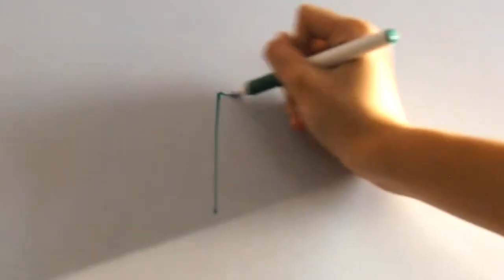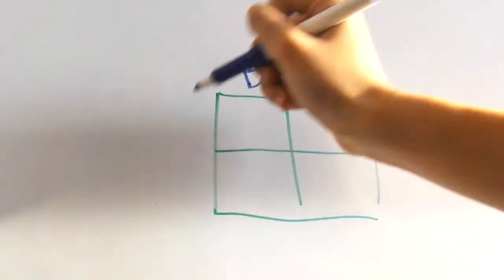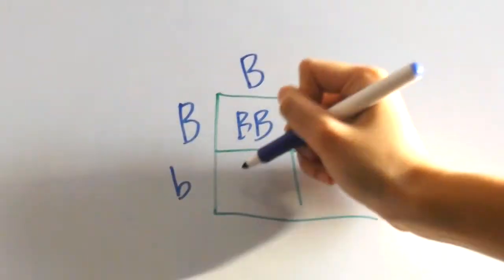Take a look at this Punnett square. If you cross two heterozygotes, there are two ways to get another heterozygous child. That's because the mother might be giving a recessive allele and the father might be giving a dominant allele or vice versa.